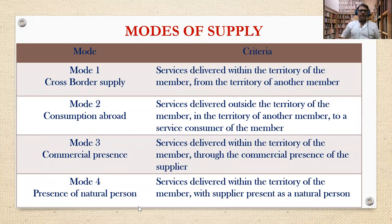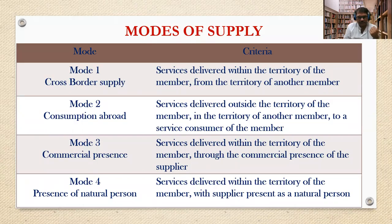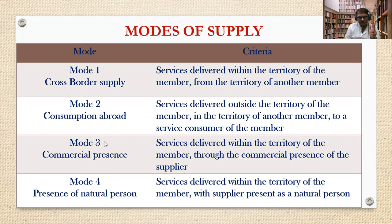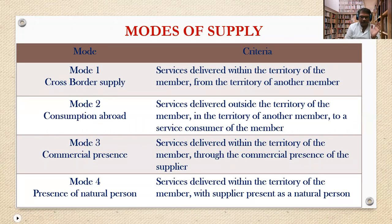Mode 4 is presence of natural persons, where a physical branch is started in the country where the service is required. This is generally done by MNCs because they can afford to start a service point abroad. Services are delivered within the territory of the member with the supplier present as a natural person. Modes 2 and 4 are interrelated but not completely — Mode 2 is smaller scale, Mode 4 requires more funds.